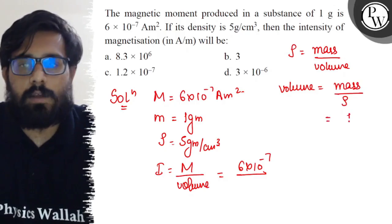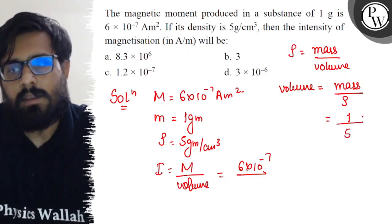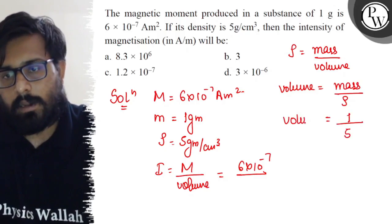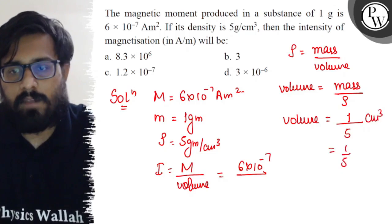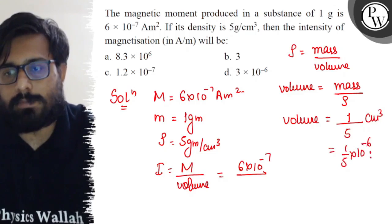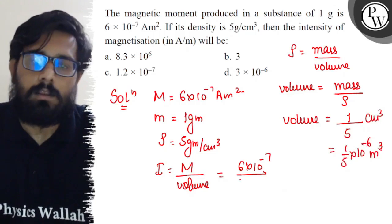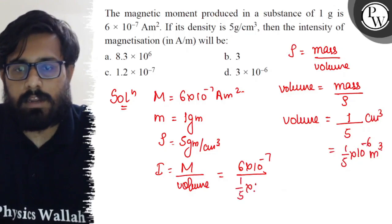Mass is 1 gram upon density of 5 gram, so volume is 1/5 centimeter cube, or 1/5 × 10^-6 meter cube.